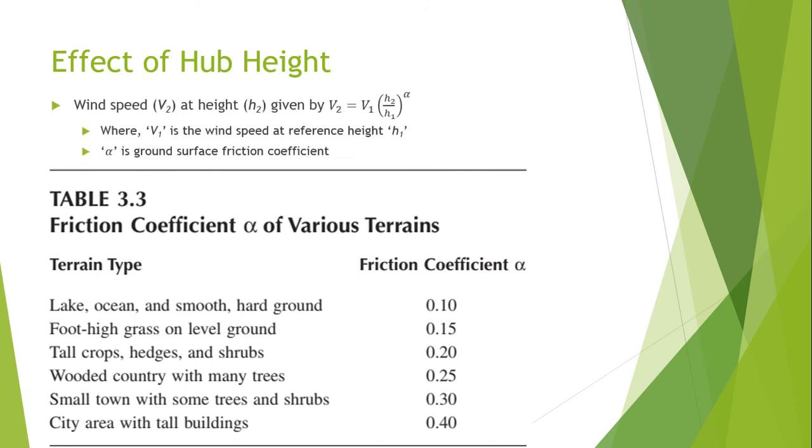Now I will discuss the effect of hub height. Taller wind turbines have the potential to provide additional clearance needed for longer blades that increase energy capture per turbine.